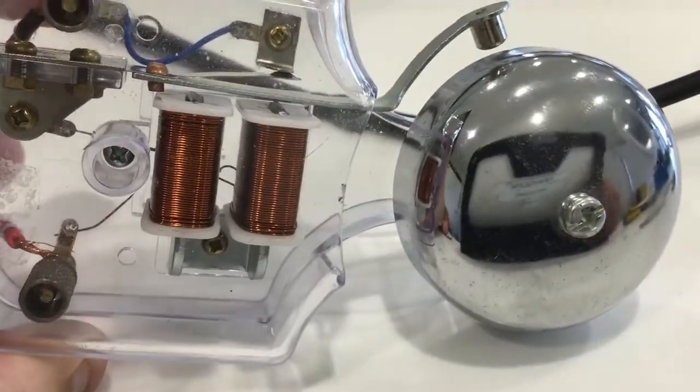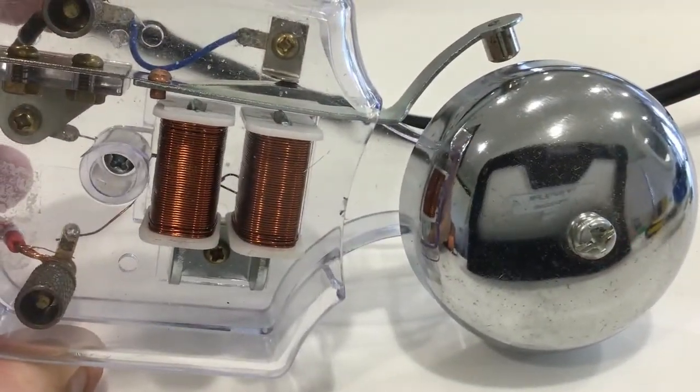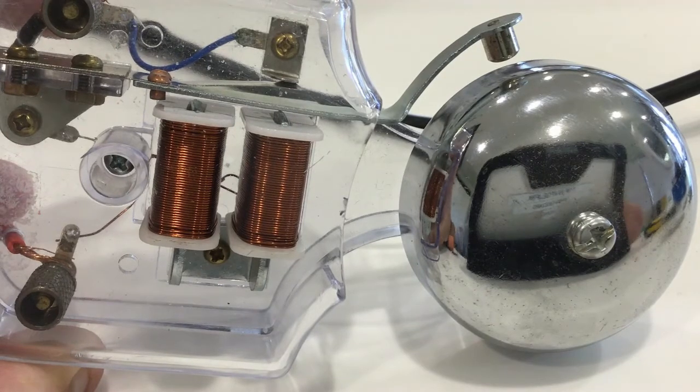So I've got a bell here. Now what you can see is there are actually two electromagnets.